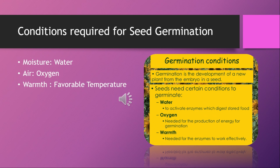The mature seed germinates only on receiving suitable conditions: moisture, air, and warmth. Water softens the seed coat and makes it burst open for the radicle and plumule to come out. Water activates the embryo to grow. Water also dissolves stored food and activates enzymes so that food is available for the growing embryo.